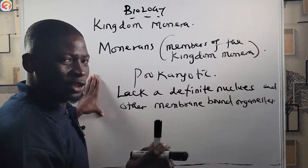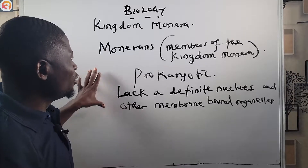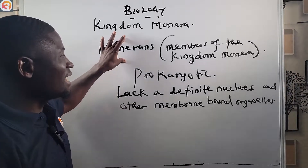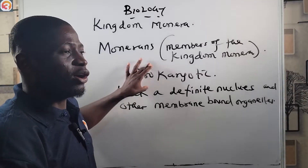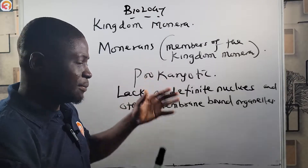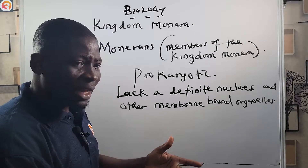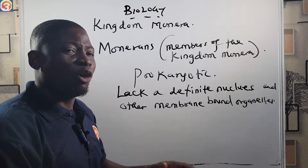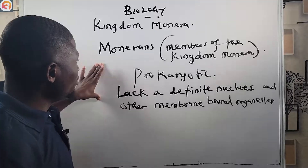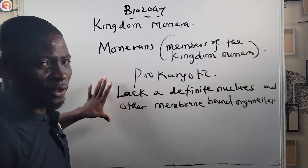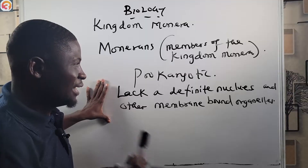Please note this: among the five-kingdom classification, monerans are the only prokaryotic ones. All other kingdoms — Protista, Fungi, Animalia, and Plantae — are all eukaryotes.